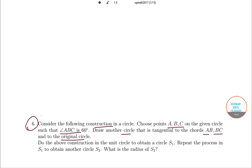Do the above construction in the unit circle to obtain a circle S1. Repeat the process in S1 to obtain another circle S2. What is the radius of S2? So here I will not actually teach you how to make the circle, that is your homework. But I'll give you a lot of hints and I'll definitely give you the answer of the last part.